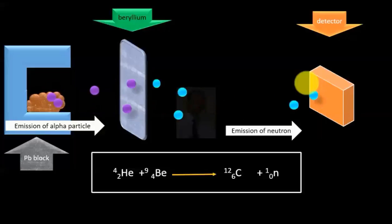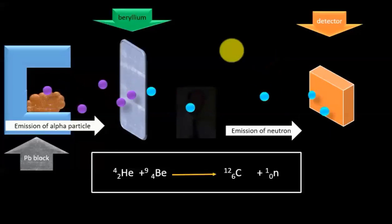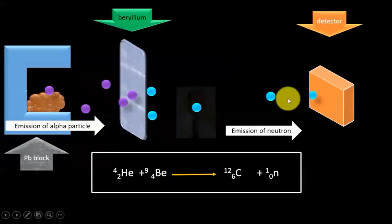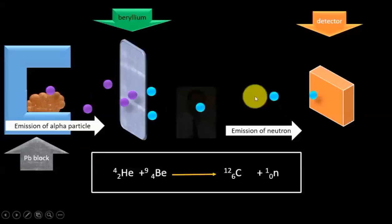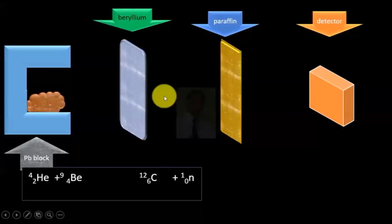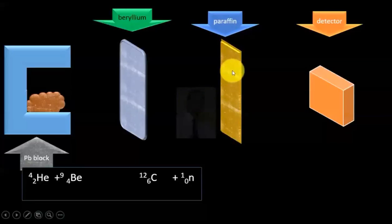These radiations were found to be highly penetrating radiations and initially these radiations were thought to be gamma radiations. Then the experimental setup was changed.